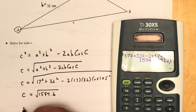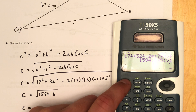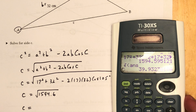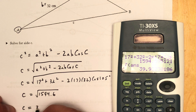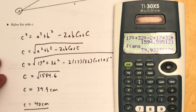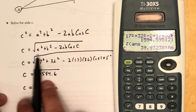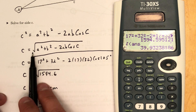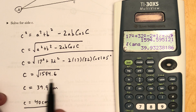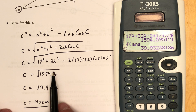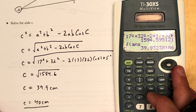Inside the square root we get 1594.6. Taking the square root of that gives a value of 39.9 centimeters. Rounding to the nearest whole number, we get 40 centimeters. That is how you solve for side C — plug in the values you know using this formula. You can apply the square root at the beginning or after solving the interior expression; just don't forget to do it. That's how you solve for an unknown side using the cosine law.